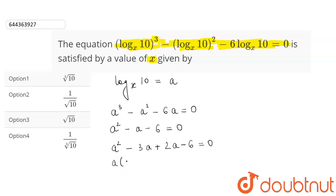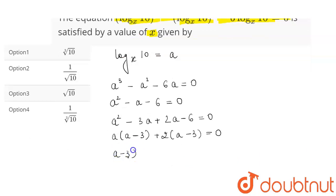we will get a squared minus 3a plus 2a minus 6 equals 0. Taking a common, we will be left with a minus 3. Taking plus 2 common, we will be left with a minus 3 equals 0. This becomes a minus 3 into a plus 2 equals 0. And from here we get the value of a as 3 and minus 2.